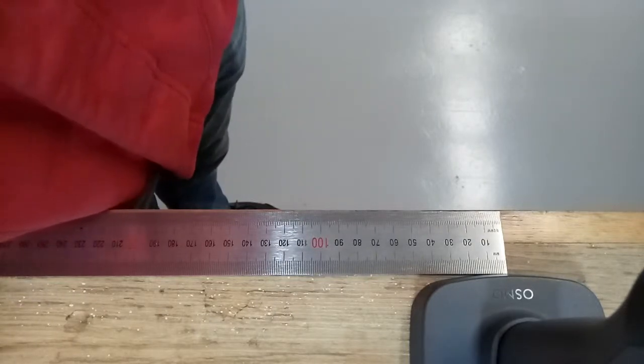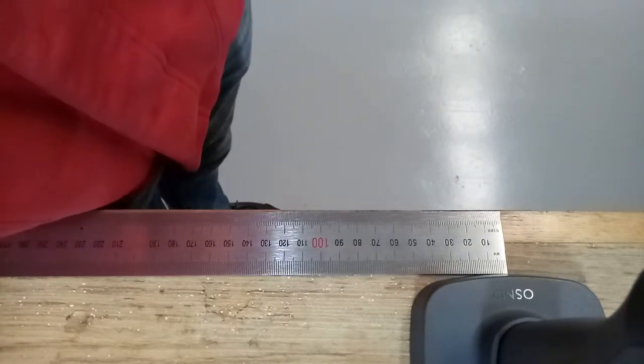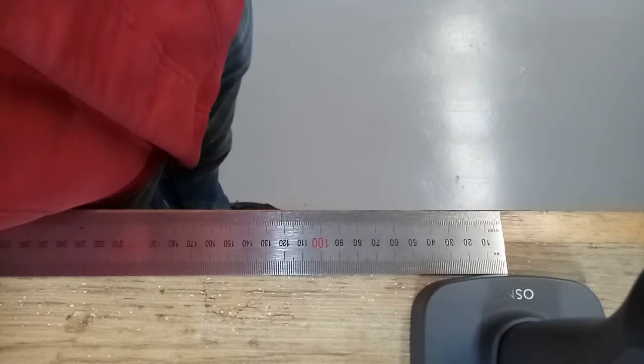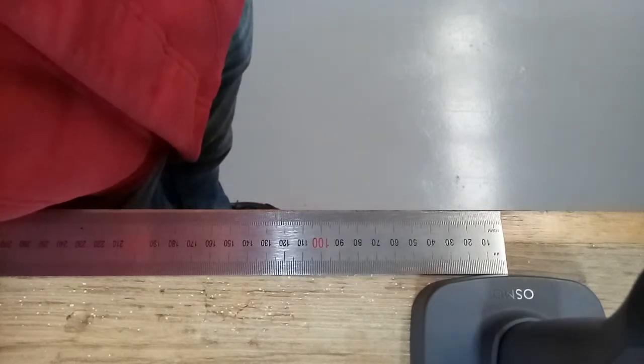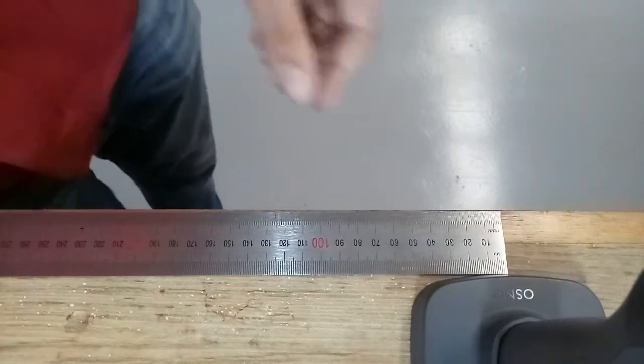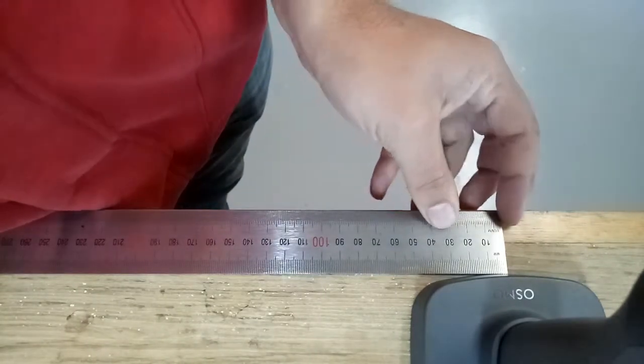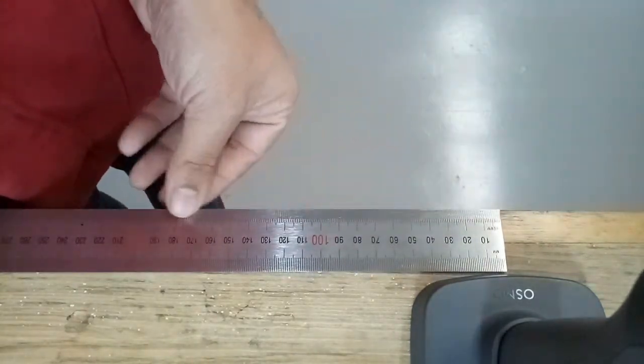This is an instructional video for how to take the four photographs needed to make your 3D hand. The first step is to find a ruler and stick it along the edge of a table.